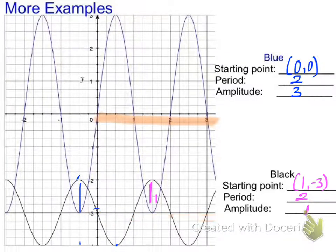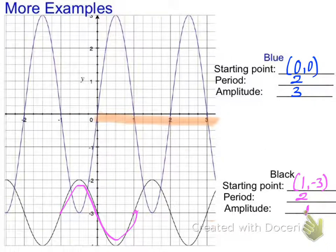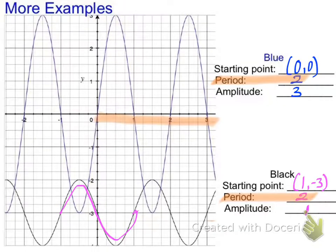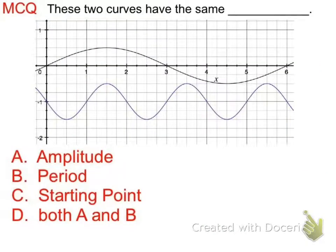Note that you could also use a sine curve starting at (−1, −3) for the black graph — still the same period and amplitude, just a different starting point. Period and amplitude stay consistent; only starting points vary. These two graphs share the same period, but have different starting points and very different amplitudes, as you can see from how tall the blue graph is. Checkpoint question: what do these two curves have in common — amplitude, period, starting point, or both A and B? Explain how you know.